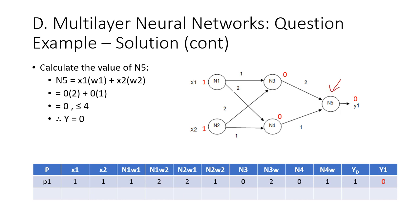The final neuron to compute is the output layer, neuron five. The arrows coming into neuron five come from two sources. The first arrow comes from neuron three where the value is zero and the weight is two, so we plug in zero times two. The second arrow comes from neuron four where the value is zero and the weight is one. We sum them and get zero, which is less than four, therefore y is zero.